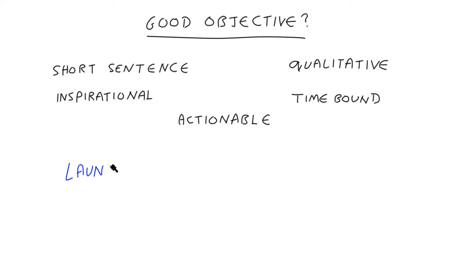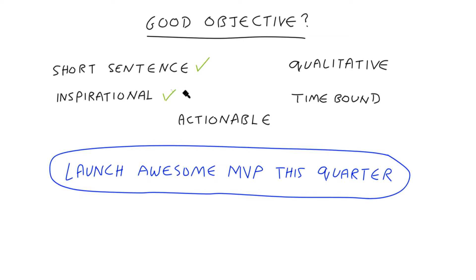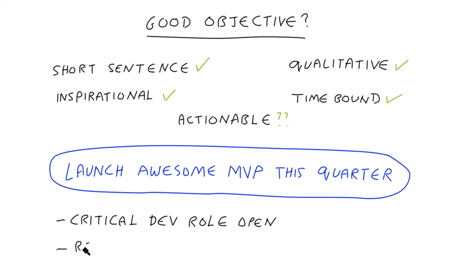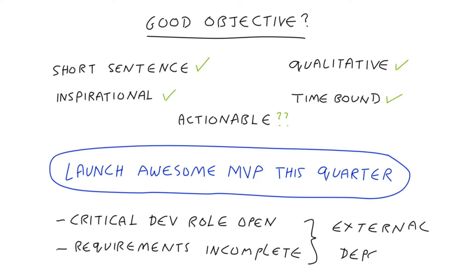For example, if we had an objective of launching an awesome MVP in the next quarter, at first glance this might look like a great objective for an engineering team — it's short, inspirational, and time-bound. But the words alone won't tell us if the objective is a good one; we also have to consider external dependencies. Say the engineering team is not complete and a critical dev role still has to be filled, or that MVP requirements are not ready. That gives us two critical dependencies: on recruitment to bring in suitable candidates, and on product management to finalize requirements. We do have to be practical because in most companies things move quickly and there will be dependencies, but it's important to ensure your objectives don't have any critical external dependencies.